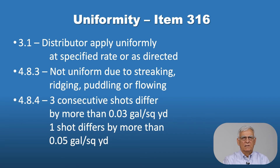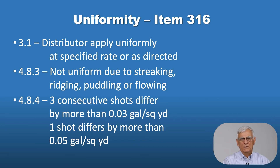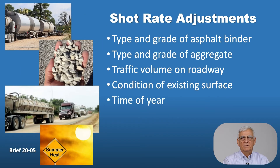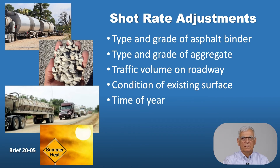Item 316 of the specification talks about uniformity: a distributor must apply asphalt at a uniform specified rate with no streaking, ridging, puddling, or flowing per specification 4.8.3. Three consecutive shots cannot differ by more than 0.03 gallons per square yard, and one shot cannot differ by more than 0.05 gallons per square yard. Typical shot quantities range from 0.3 to 0.45 gallons per square yard. Shot rate adjustments depend on the type and grade of asphalt binder, type and grade of aggregate, traffic volume, condition of the existing surface, and time of year.